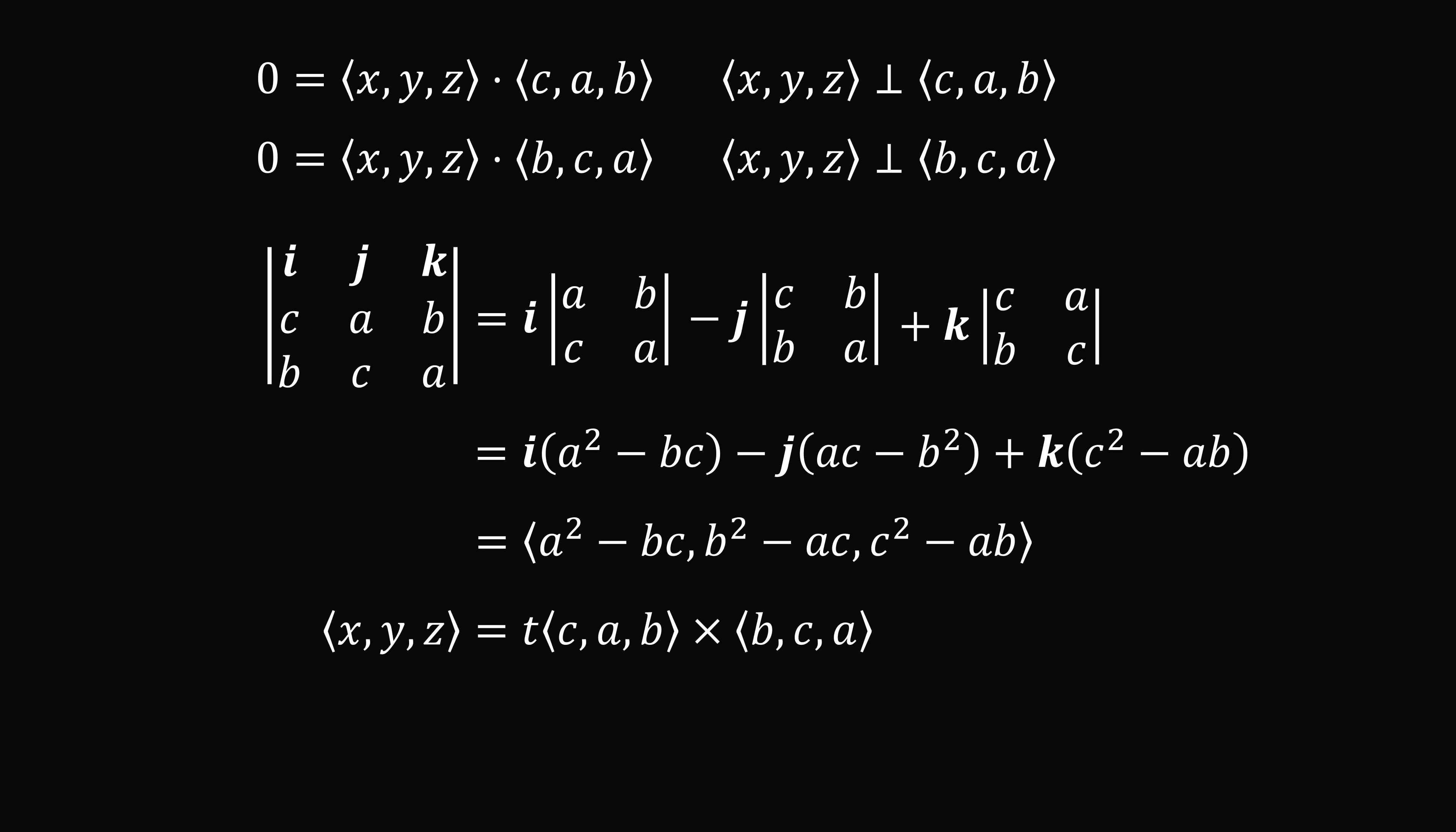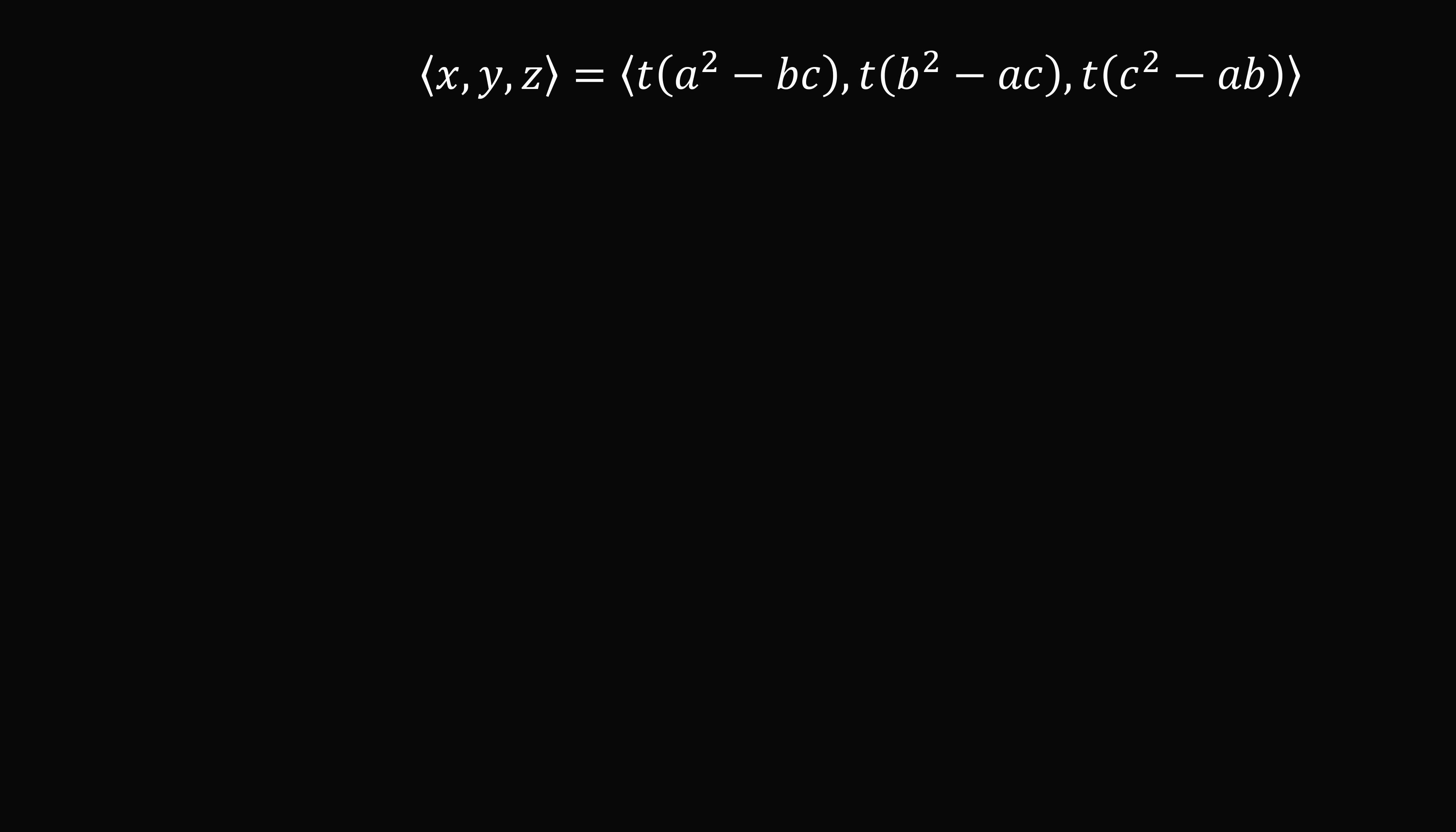Now, the vector (x, y, z) will be some multiple of the cross product of (c, a, b) and (b, c, a). So, (x, y, z) will be t times what we've just calculated. Let's focus on this. We need to figure out the value of t. How can we do that? Well, let's go back to our original three equations. Now, if a equals b equals c equals zero, if you substitute that into our formula, you'll see that x, y, and z must be equal to zero. That's the only solution.